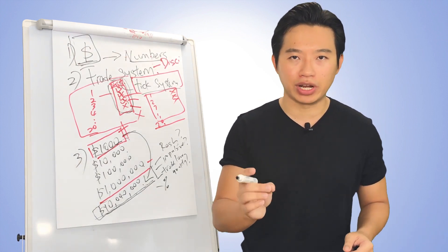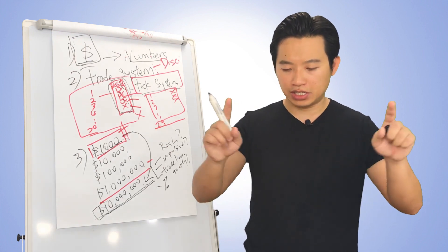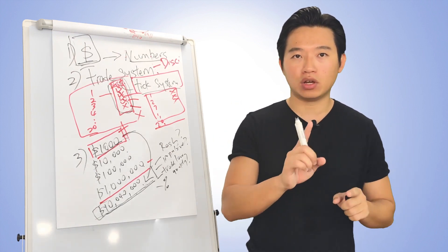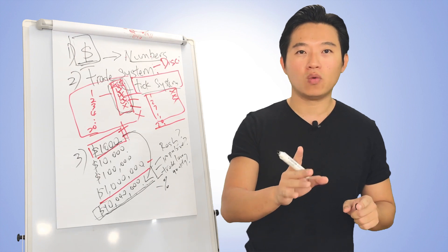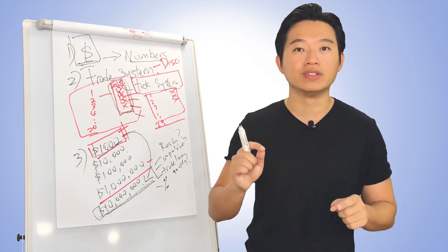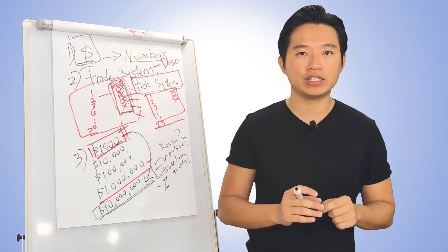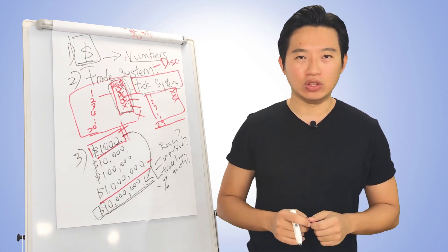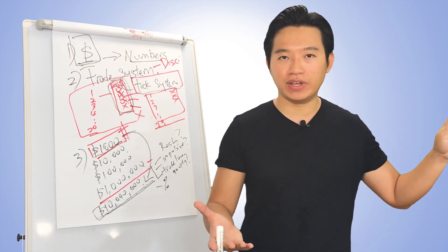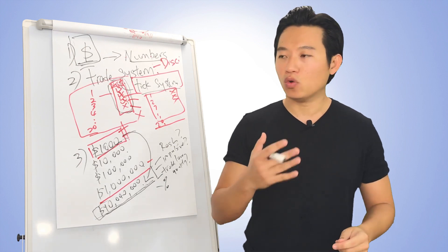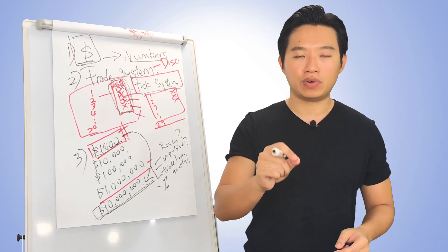When you apply for a job at a bank or as a fund manager, what they're going to look at is your track record. They don't want to see you turning $1,000 into $1,000,000 by going all in every time — they wouldn't want you doing that with their funds. What they want to see is consistent profitability, managed risk sizes, and proper money management. That's how they know they've found a real trader, not someone who gambled their way to profit — someone they can truly trust with their funds.